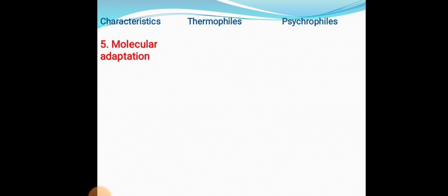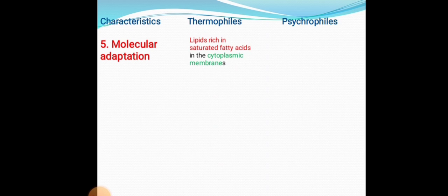Next is molecular adaptation. As thermophiles grow at high temperatures and psychrophiles at low temperatures, there must be some molecular adaptations to keep them stable and functional at these extremes. These organisms have evolved a complex range of molecular adaptations in their cellular molecules such as DNA, RNA, proteins, and lipids.